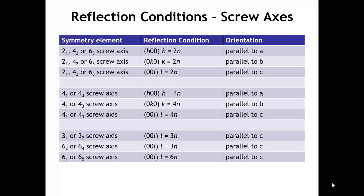Going back to Lecture 20 on reflection conditions, we saw that there were certain symmetry elements when present that give rise to missing peaks. In the last lecture, we calculated the structure factors for a body-centered cubic metal, tungsten, and we saw how when h plus k plus l was an odd number, the scattering off of the two atoms in the unit cell canceled out and the intensity went to zero. You can also do similar calculations for a face-centered lattice or a base-centered lattice and show how the reflection conditions come out of the structure factor calculations.